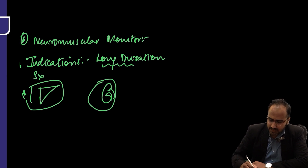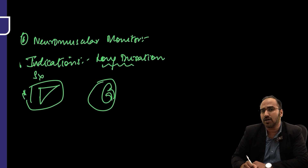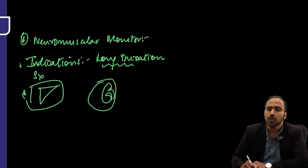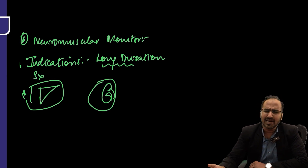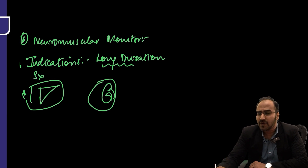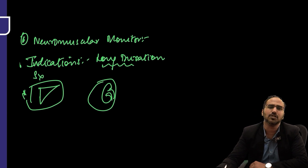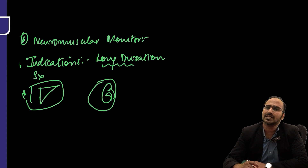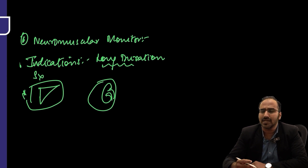Neuromuscular monitoring is usually done for long-duration surgeries and for patients having hepatic failure or renal failure. Nowadays it is done for any surgery lasting more than five to six hours.